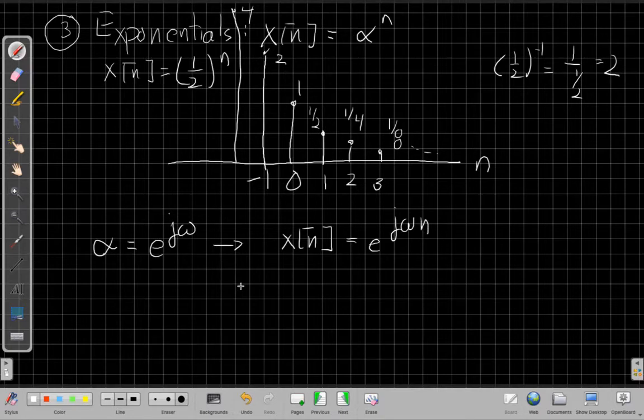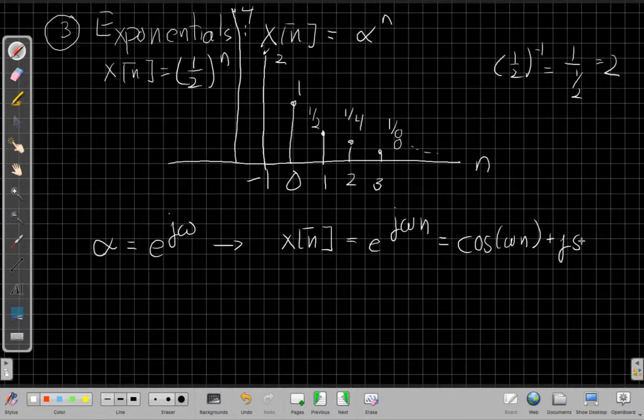And this is a signal that has magnitude 1, but as omega changes, it's going around and around the unit circle. Euler's identity tells me that anytime I have a complex exponential, I can write it as the cosine of the exponent plus j times, plus the imaginary part is the sine of the exponent. So we will use this a lot this semester.